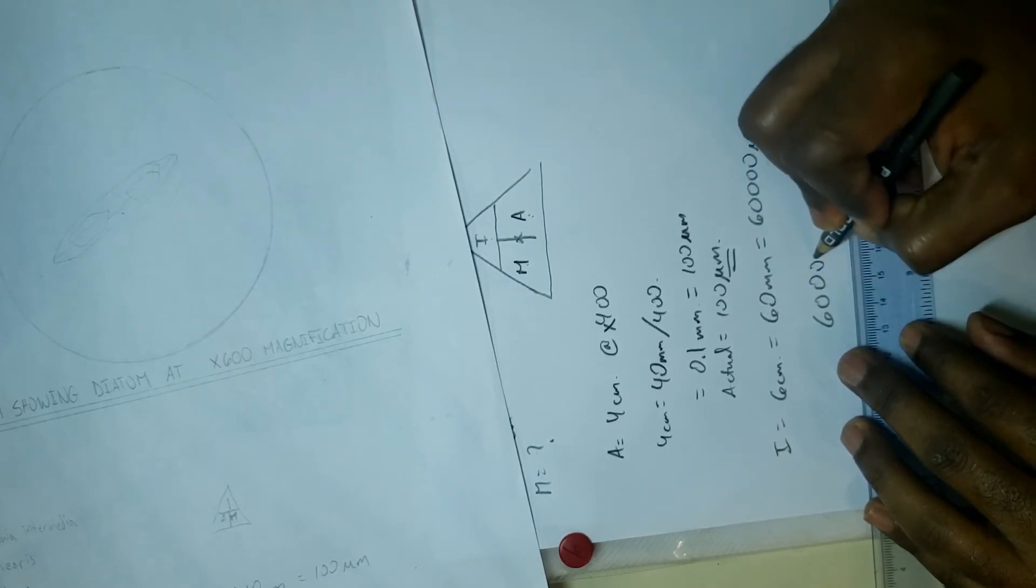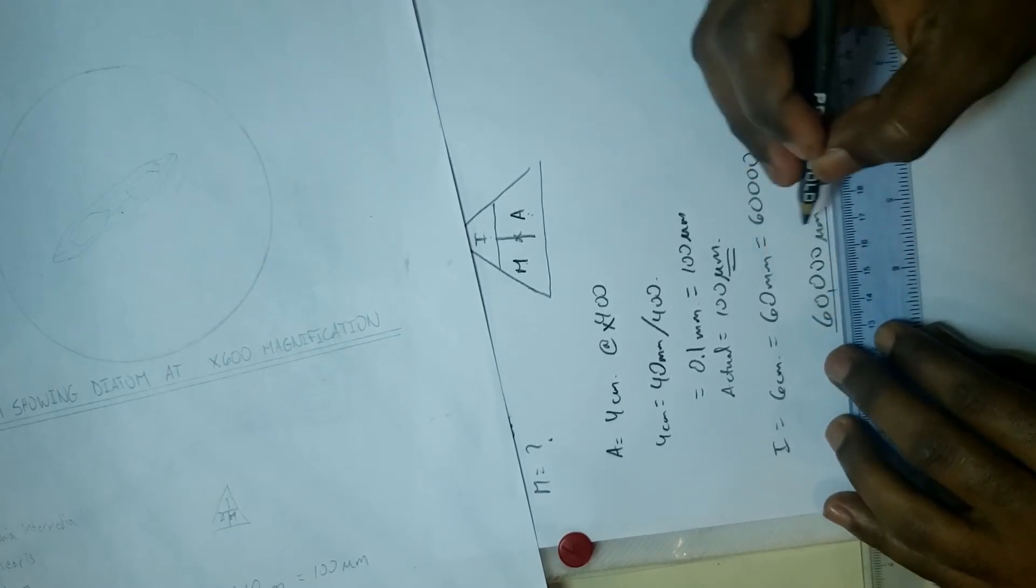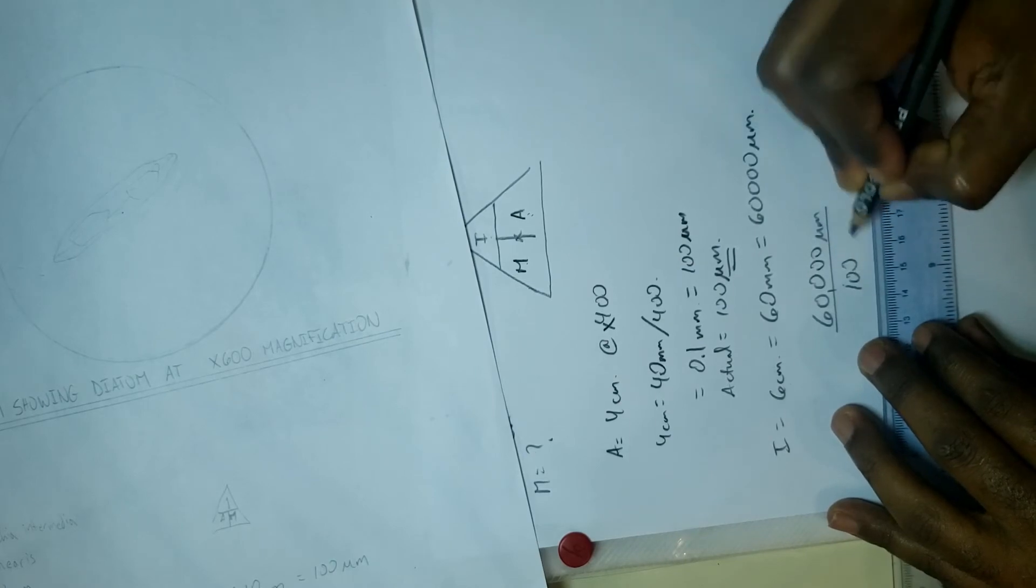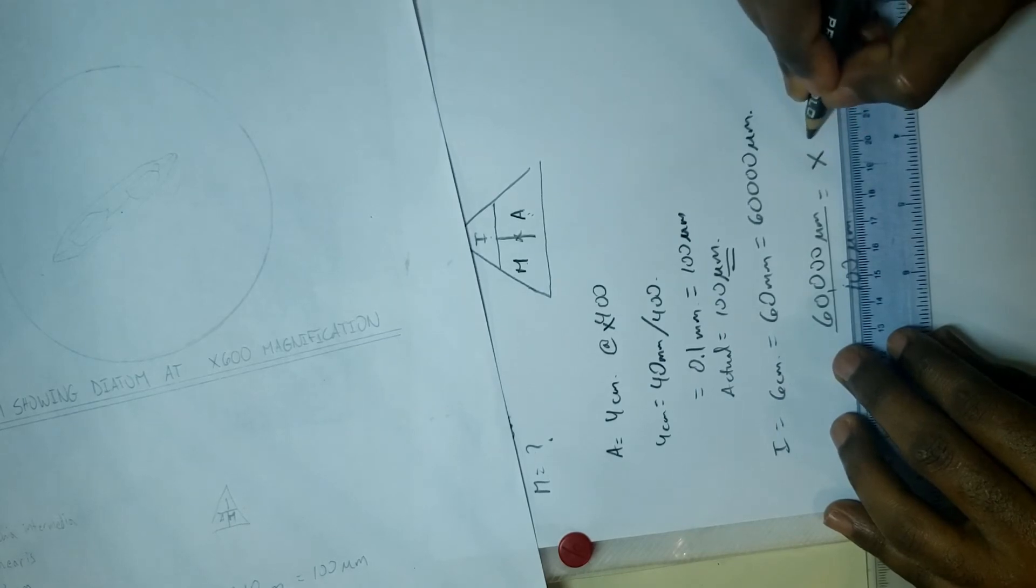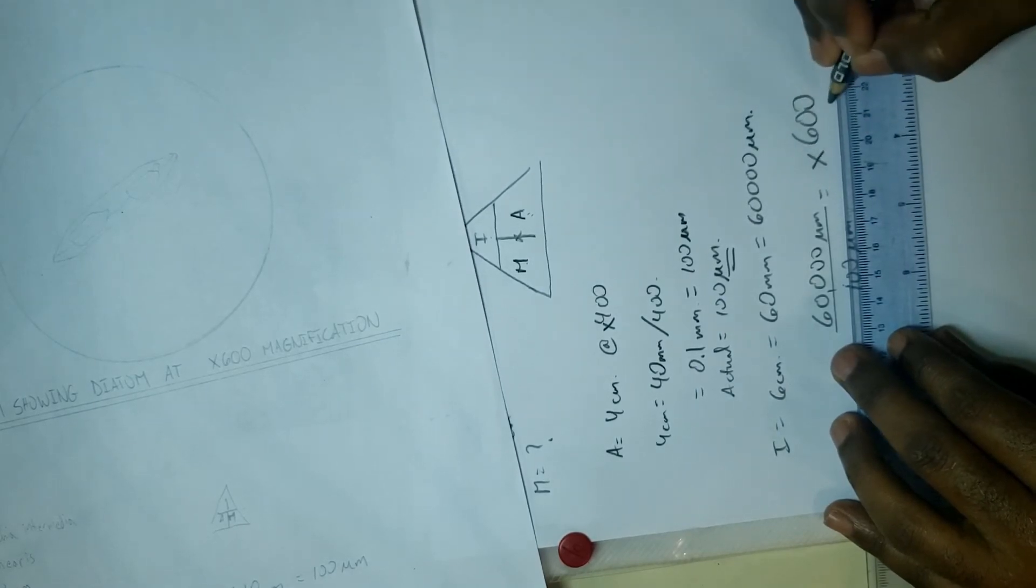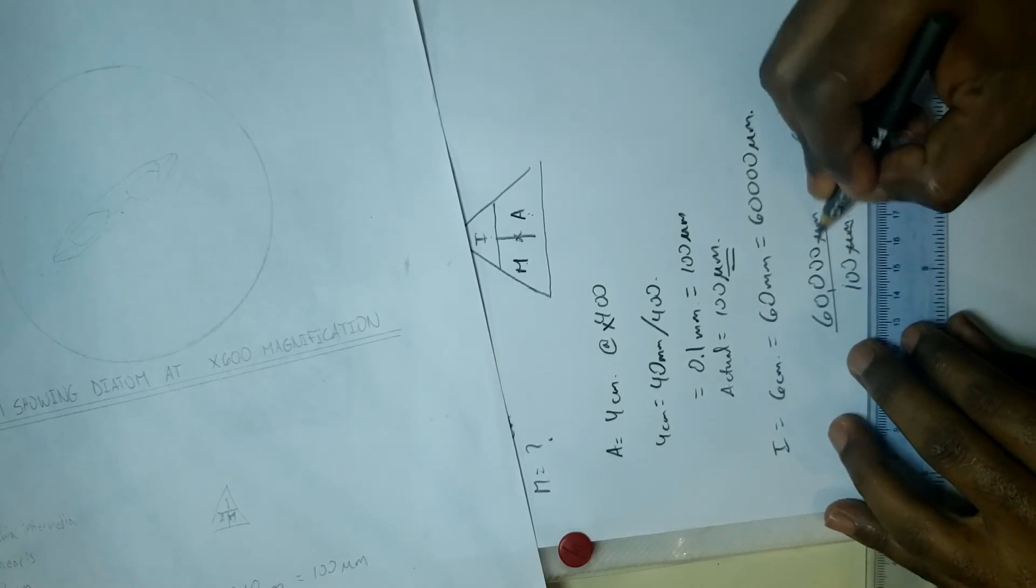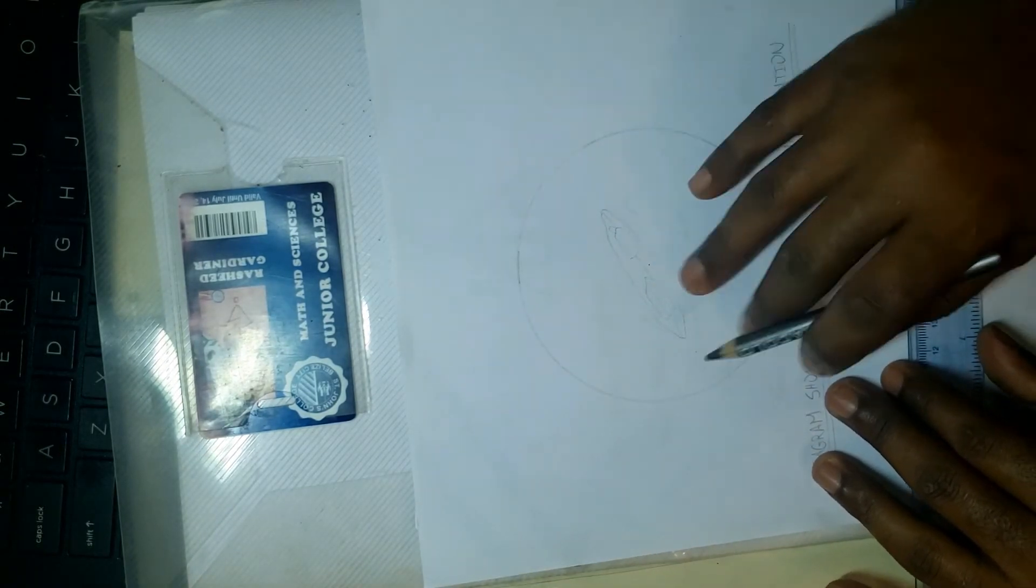So it's that 60,000 micrometers divided by 100 micrometers, and that gives you times 600 magnification. Notice no units because your units cancel. That is how I got the times 600 magnification for this drawing of a diatom.